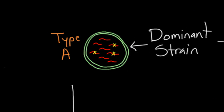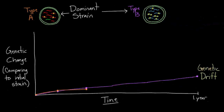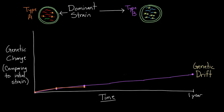Then a really interesting thing happens. On a third trip, you find that an entire segment is gone and it's replaced by a new chunk of RNA — a huge new chunk. How do you plot that on the genetic change axis? Well, it's really different. Now that one-eighth of the entire genome is different, that would be a huge jump on the chart. Now there's been a massive genetic change.